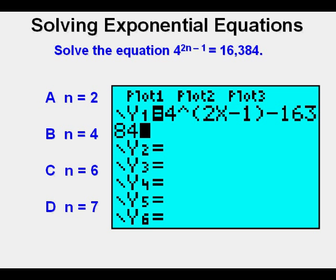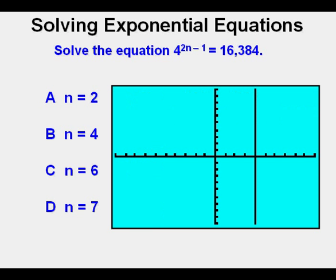Next to solve by graphing, another method. We go to y equals, then enter 4 to the power of quantity 2x minus 1 minus 16,384. Note that we have to use x here and cannot use another letter as a variable. Then we graph by pressing zoom 6 or graph. We see the function crosses the x axis at x equals 4.